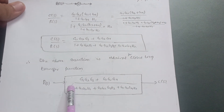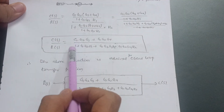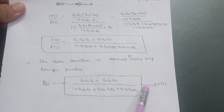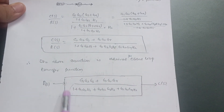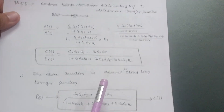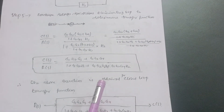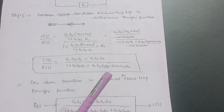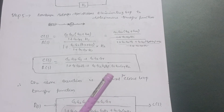So R(s) and C(s) — this is your whole transfer function for this particular closed-loop system. I hope it is understood. If this video was beneficial, please share it with all those friends who need it. Thank you.